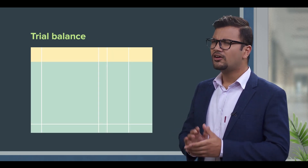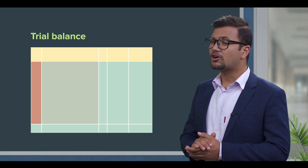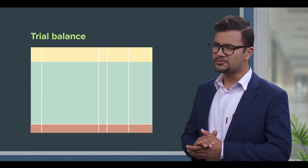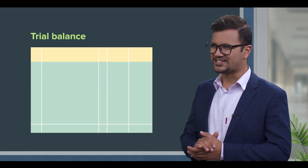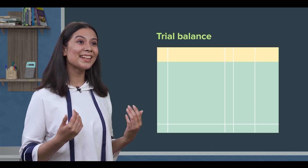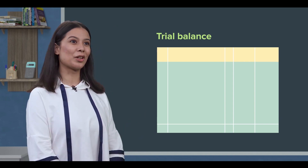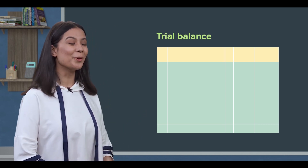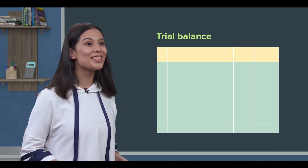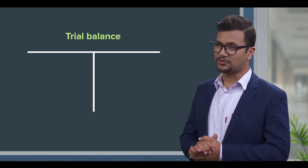Now, this is the format of Trial Balance. We will also learn how many items are recorded. Let's start and learn about Trial Balance. First, let's try the Trial Balance format. Trial Balance is a T-shaped format.